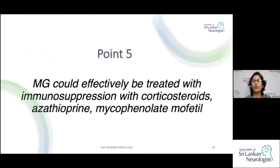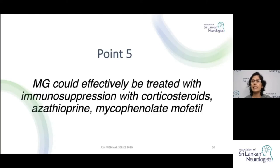The next pearl: Myasthenia Gravis can be effectively treated with immunosuppression using corticosteroids, azathioprine, and mycophenolate mofetil. Similar to Guillain-Barré syndrome — also an autoimmune condition — many treatment modalities overlap, but unlike AIDP, long-term immunosuppressive treatment is recommended in Myasthenia Gravis.